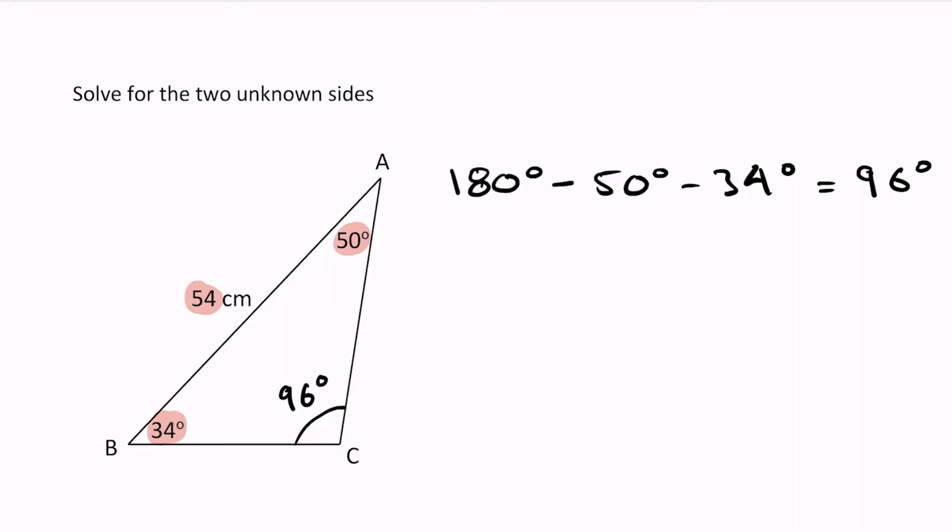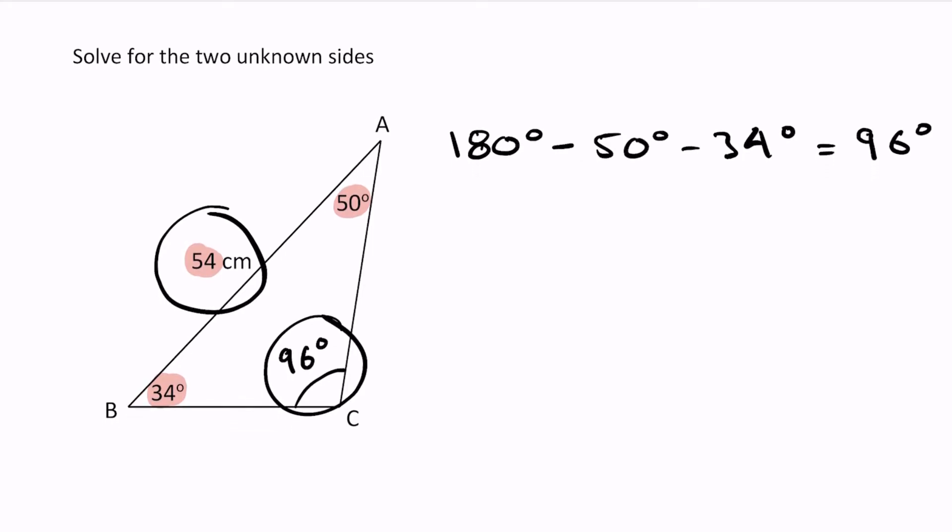I think we're ready to solve. The sine law is used when you have an angle and its opposite side. You have to have at least one pair, and in this case we have this pair of angle and opposite side.